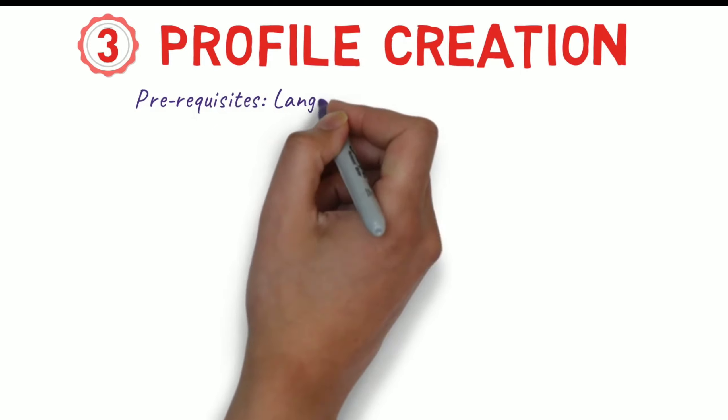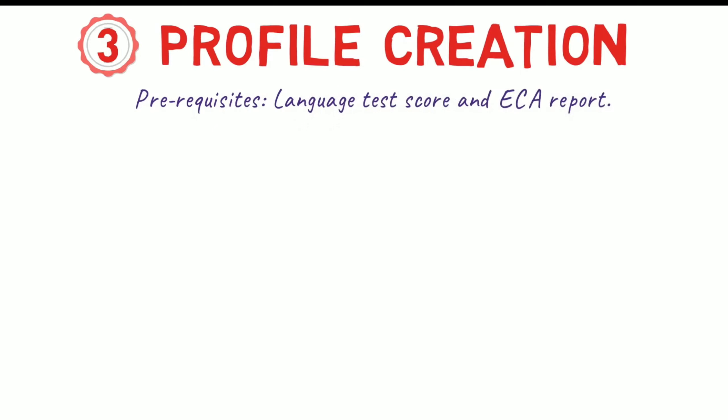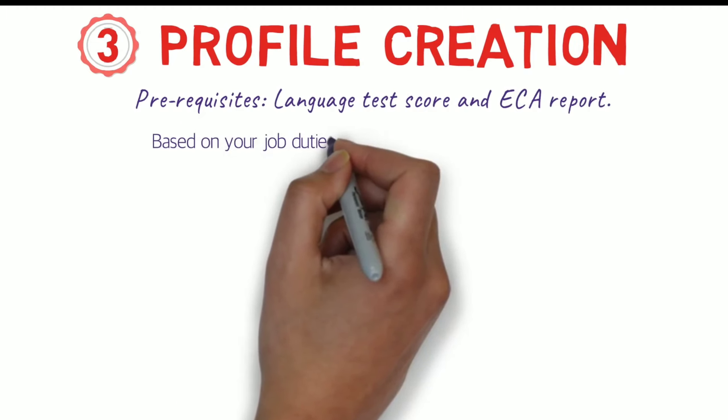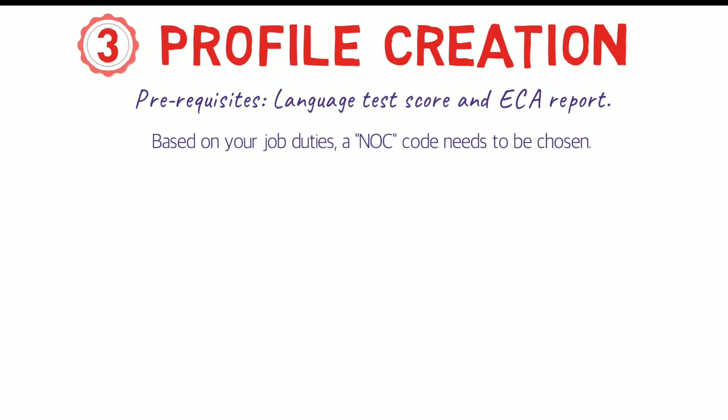The next step is Profile Creation. You have to create an Express Entry profile, but before that you need two pre-requisites: the Language Test and the ECA Report — which are Steps 1 and 2. These are required to create any profile in Express Entry. Based on your job, you have to choose your NOC code. NOC codes vary based on job roles and responsibilities. For example, an IT network admin would have a different NOC code and a software developer would have a different NOC code.